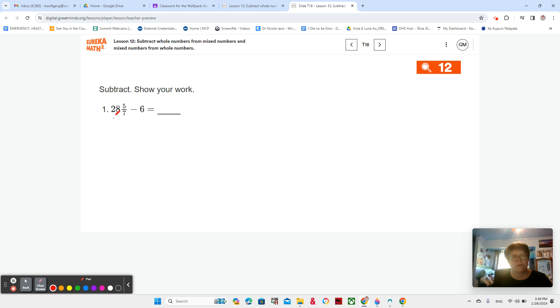So I basically just have to do 28 minus 6. Some of you can do that in your head. Some of you might need to write it down. That is fine. 28 minus 6 is 22. And I still have the 5 sevenths because I didn't give 5 sevenths of the pizza away.